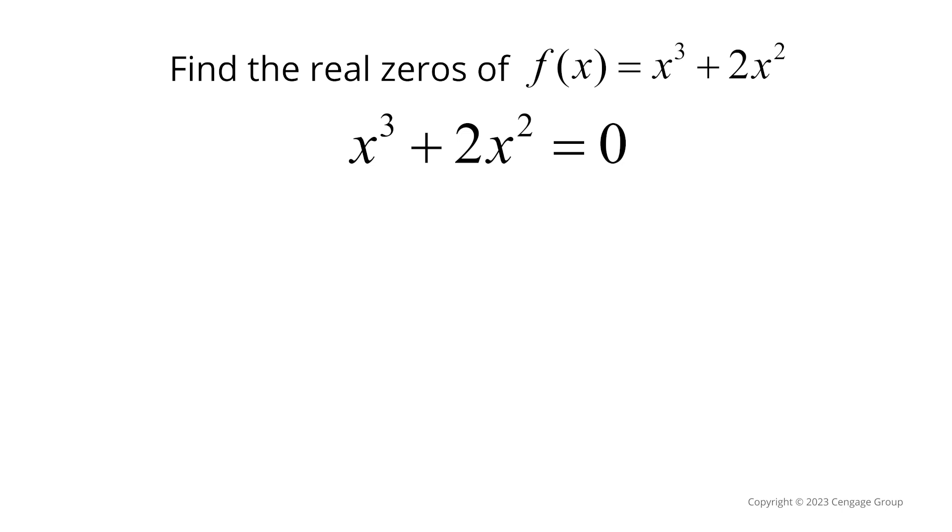In this example, we will focus on factoring. We can factor out an x squared, which is the greatest common factor, giving us x squared times x plus 2.